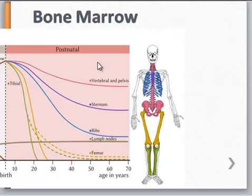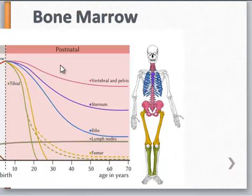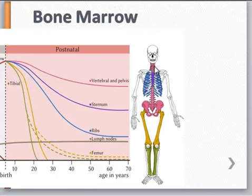At birth, all bone marrow is active and producing Hematopoietic cells, all the way to the end of puberty — so all bone marrow in that time period is red and active. After puberty and continuing on through the rest of adult life, only certain areas of bone marrow remain red and active, continually producing Hematopoietic cells. It's the axial skeleton that remains primarily active: the vertebra, the pelvis, the sternum and the ribs, as well as the proximal end of the femur and the humerus. All remaining bones have yellow marrow.